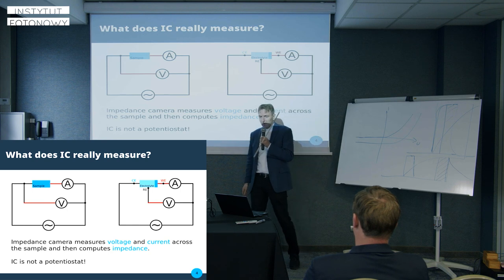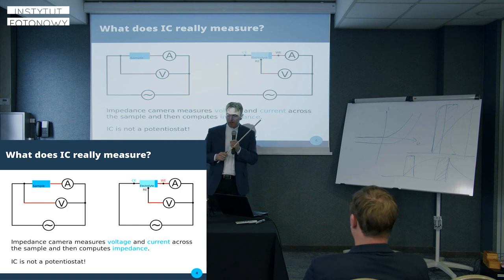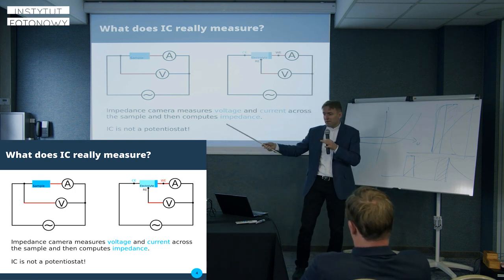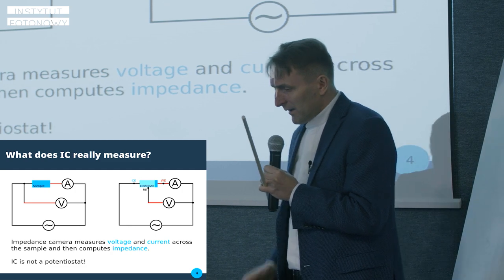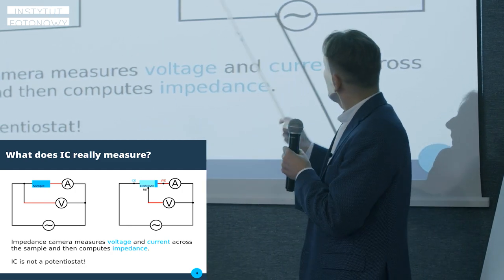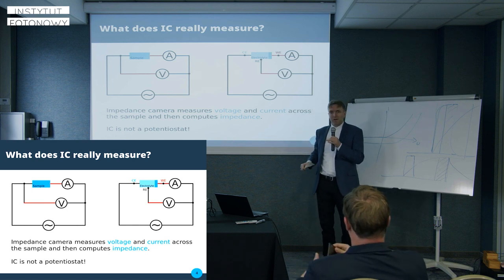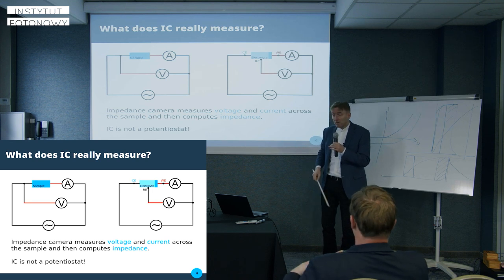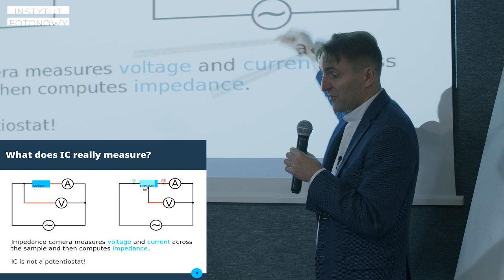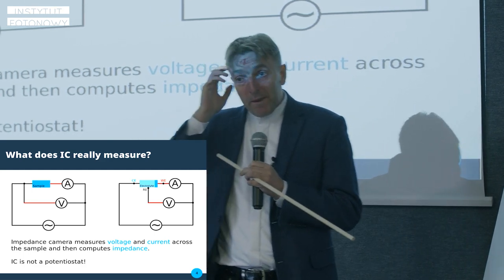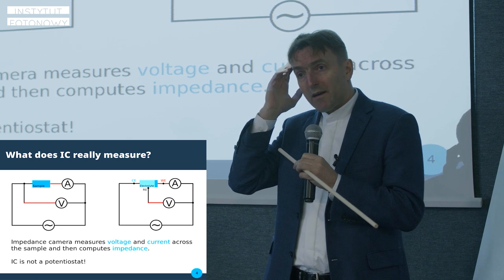The currents measured in the three-electrode setup are way lower than in the two-contact case. For the measurement, the device gets bigger because it is attached to a sample chamber — you need to shield the sample from ambient electromagnetic fields and other things. It may look like you have a potentiostat, but it is not a potentiostat. There is no internal stabilization mechanism that would keep some voltage constant, although you can shift the applied voltage up and down if you wish.